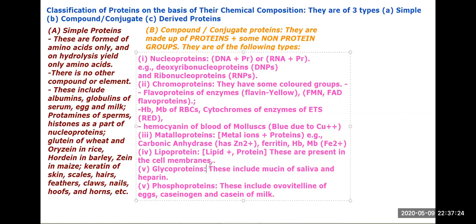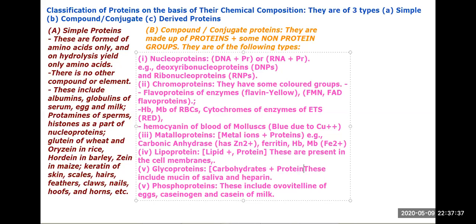Glycoproteins are carbohydrates plus proteins. These include membrane proteins. Generally, protein does not contain phosphorus, but phosphoproteins do.